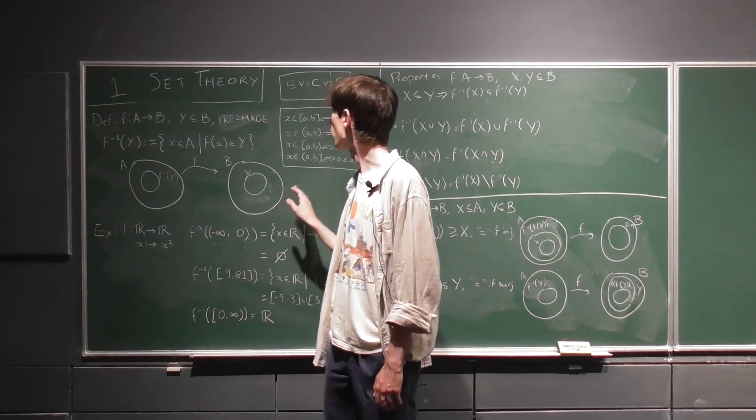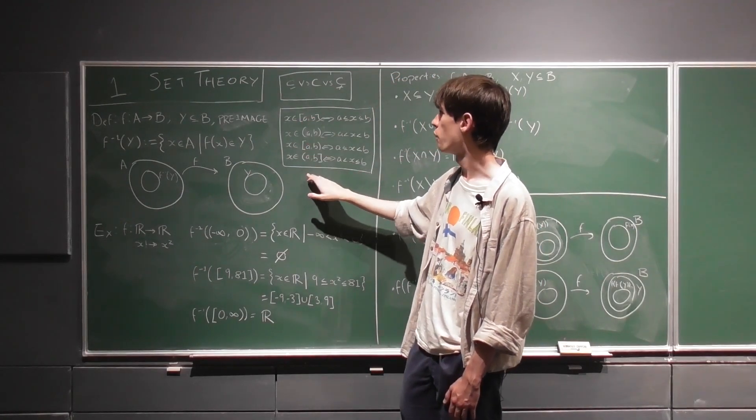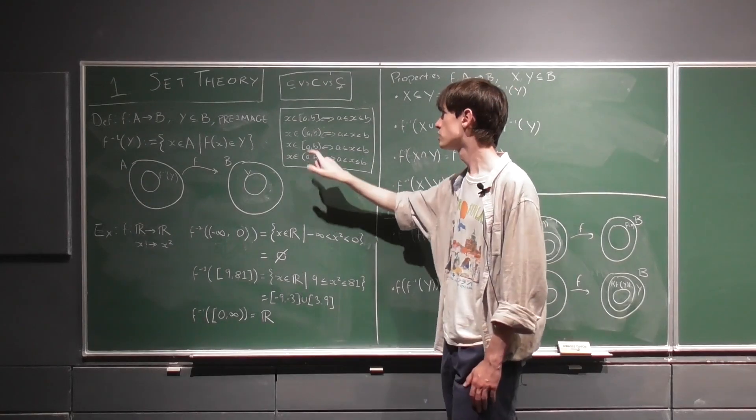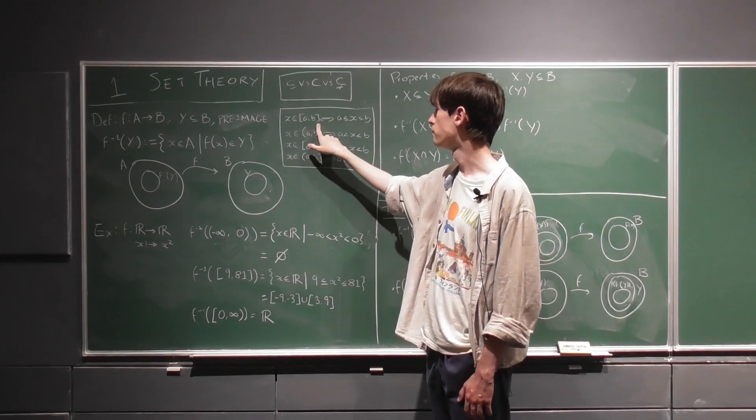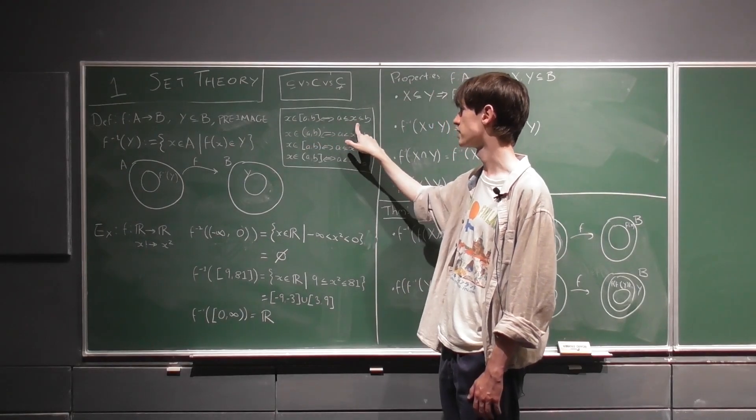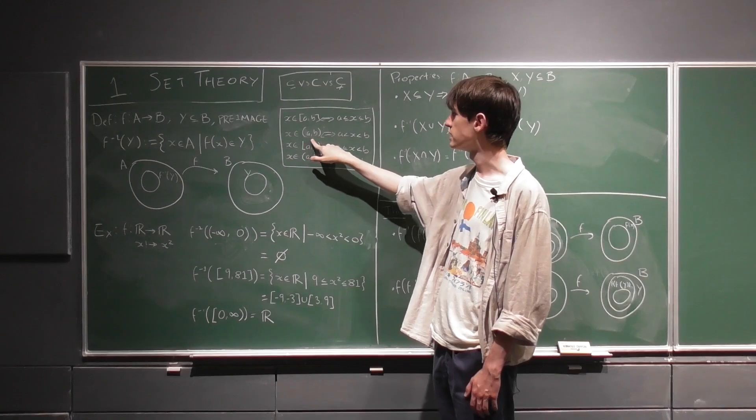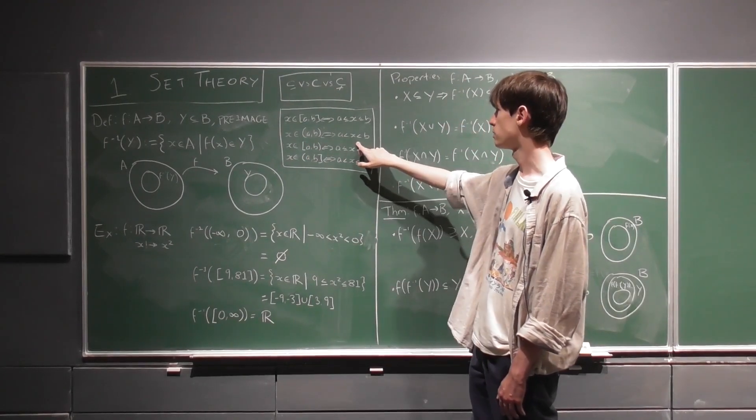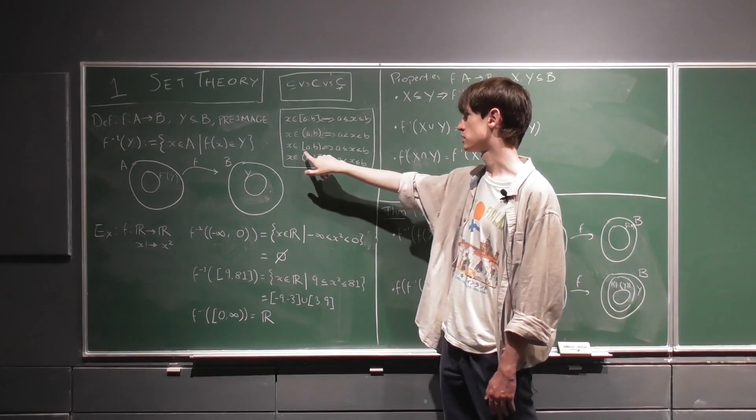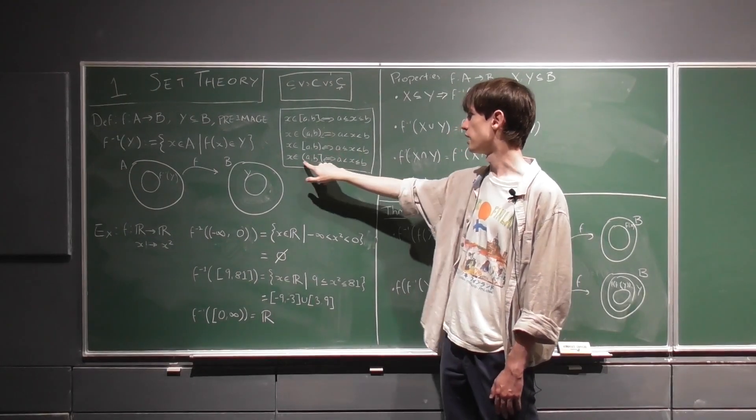Also, here we have different types of intervals which we see on the real line. So when we use these two closed brackets, we mean it's intervals closed on both ends, so we use non-strict inequalities. If we're using these open brackets, we mean it's a strict inequality on both sides, and you can mix and match the two. So here we have closed and open, and open and closed.